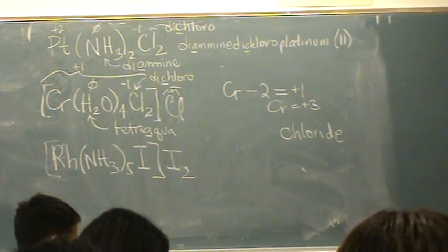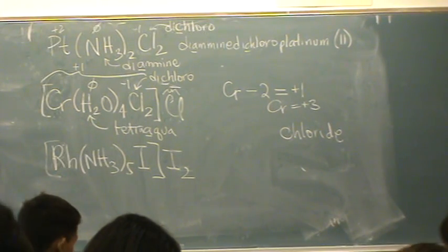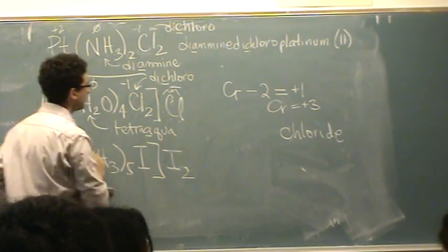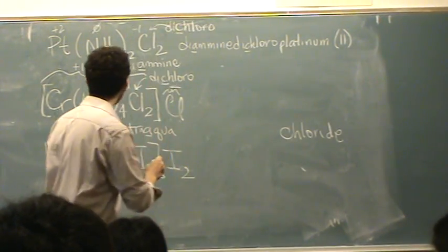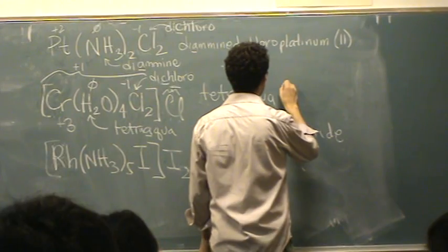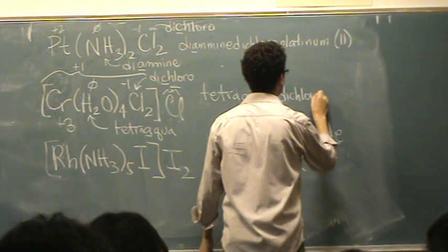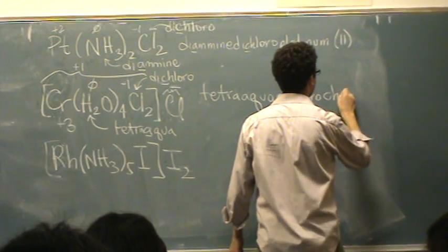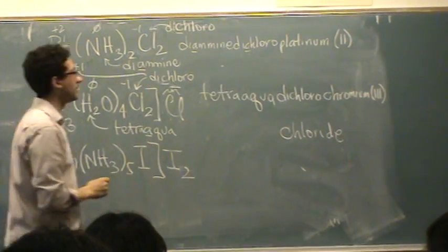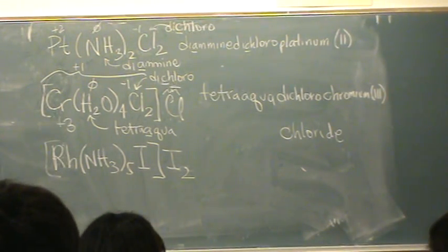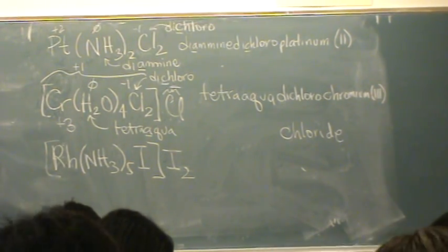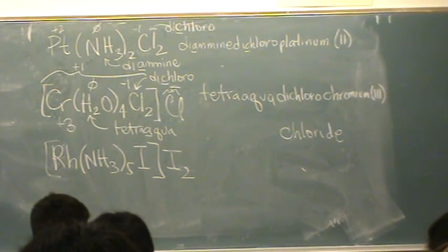Any questions on that? You need to be able to find the charge. It's really important. It has to go in the name or the name is wrong. So now we know chromium is plus three. So let's write this mess out. Tetra aqua dichlorochromium three, chloride. So it's two names. The first name tetra aqua dichlorochromium three. The second name chloride. Digest that. Let me know if you have any questions and then we'll go to the next one.